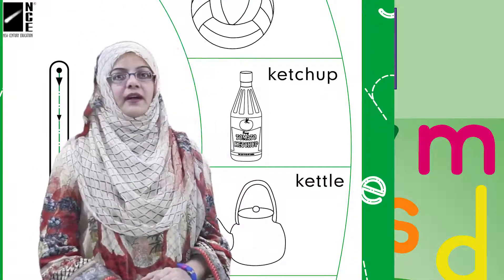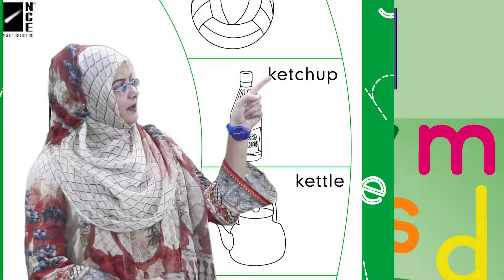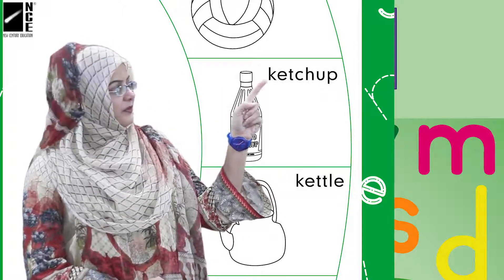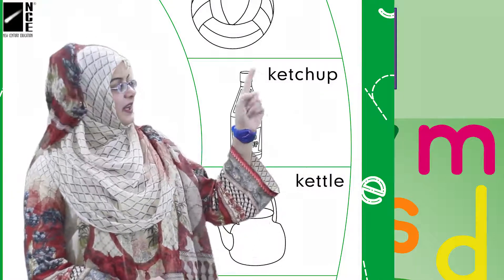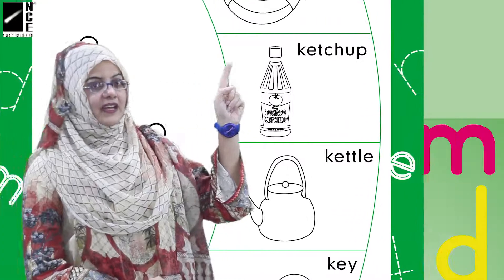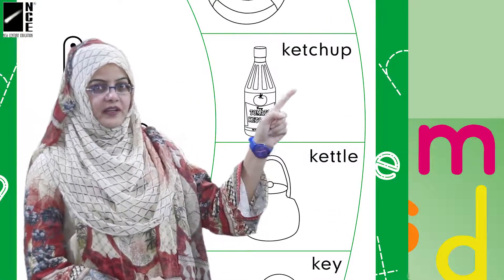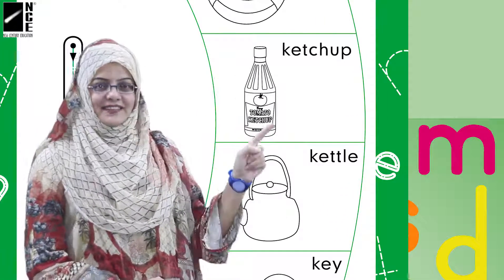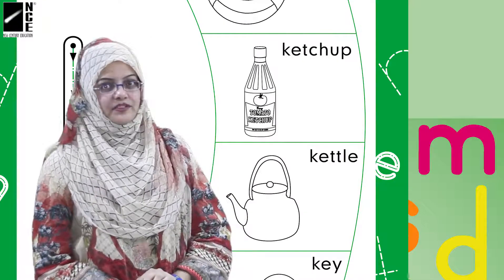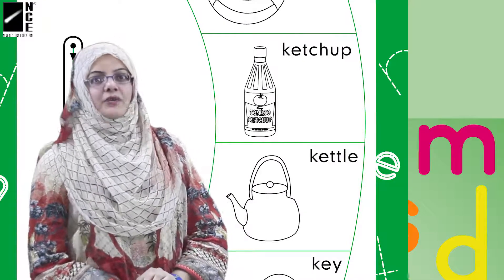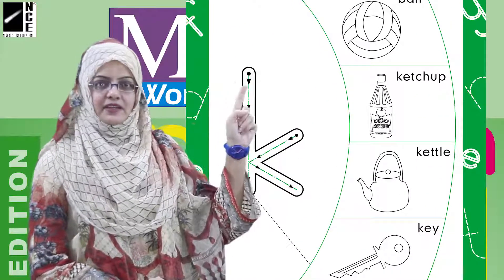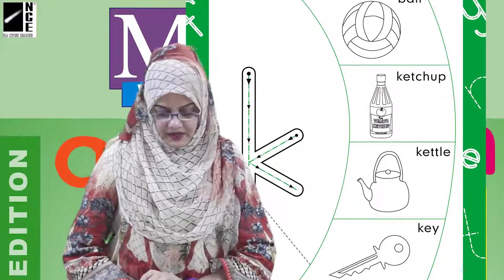Second picture میں بچوں کیا ہے؟ It's a picture of ketchup. Ketchup کو دیکھتے ہیں — match کر رہا ہے یا نہیں؟ Ketchup — 'کھ'! See, the beginning sound of both things are similar — دونوں same ہیں۔ تو ہم کیا کریں گے، ایک dotted line کی مدد سے join کر دیں گے، یعنی match کر دیں گے۔